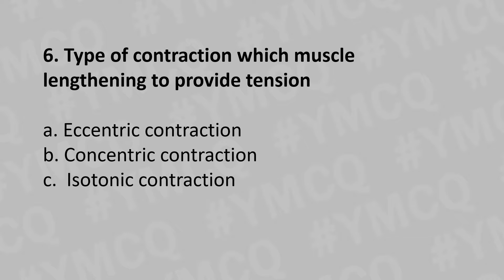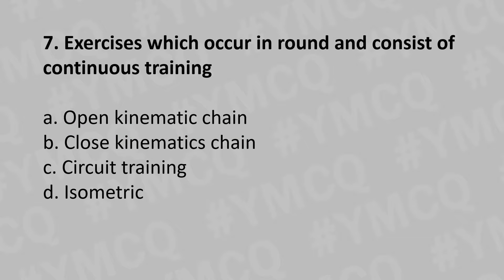Option A: Eccentric, Option B: Concentric, Option C: Isotonic. And the answer is Option A: Eccentric. Moving to our seventh question: exercises which occur in rounds and consist of continuous training.